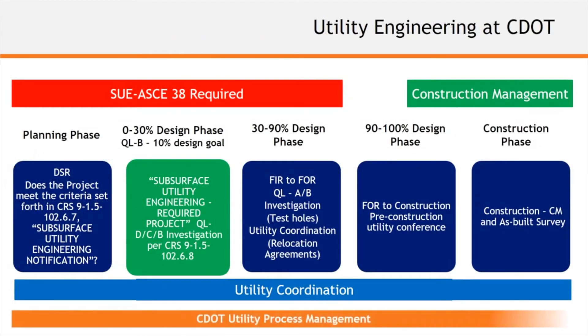Utility Engineering at CDOT includes the following phases: Planning Phase 0–30, 30–90, 90–100, and then the Construction Phase.